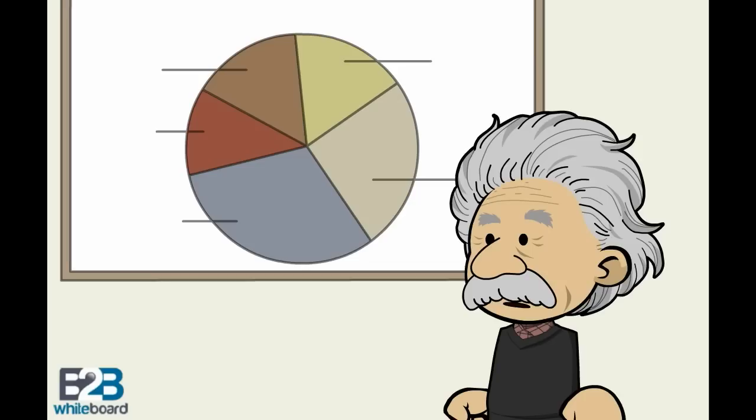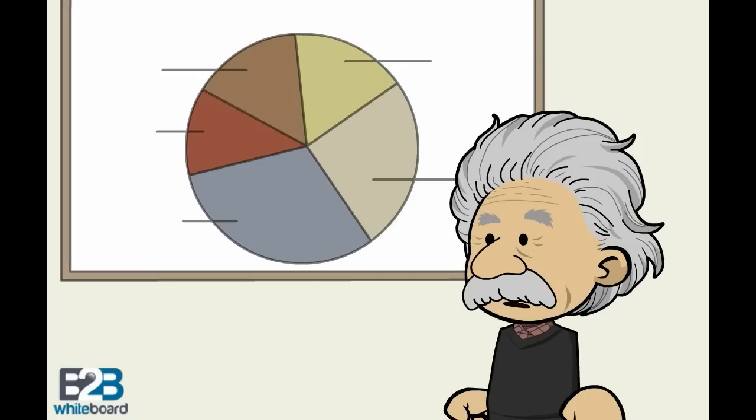Well Sarah, a polychronic time system is a system where a variety of tasks can be done at once, and a more fluid approach is taken to scheduling time.